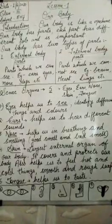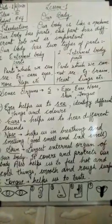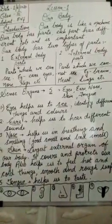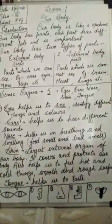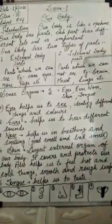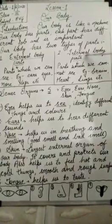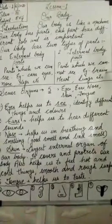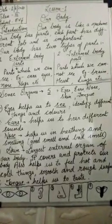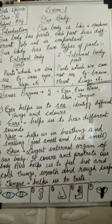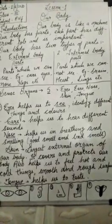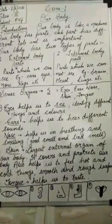And the next one is internal body parts — the parts which we cannot see. Aise body parts jinhe aap dekh nahi sakte, woh humari body ke andar hote hain. Isliye unhe hum internal body parts bolte hain. For example: brain — jaise humara dimaag — heart — humara dil — lungs — humare phephde. Aise aur bhi hain, jaise kidneys, small intestine, large intestine — woh aap aage aur classes mein detail mein padhenge.